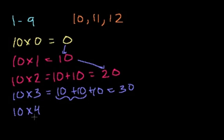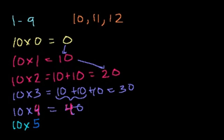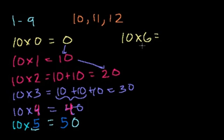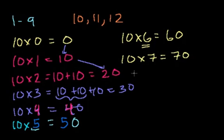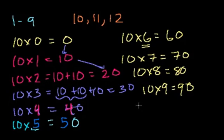So we can find 10. 10 times 4 is equal to 40. 10 times 5 is equal to 50. And 10 times 6 is 60. 10 times 7 is 70. 10 times 8 is 80. 10 times 9 is 90.